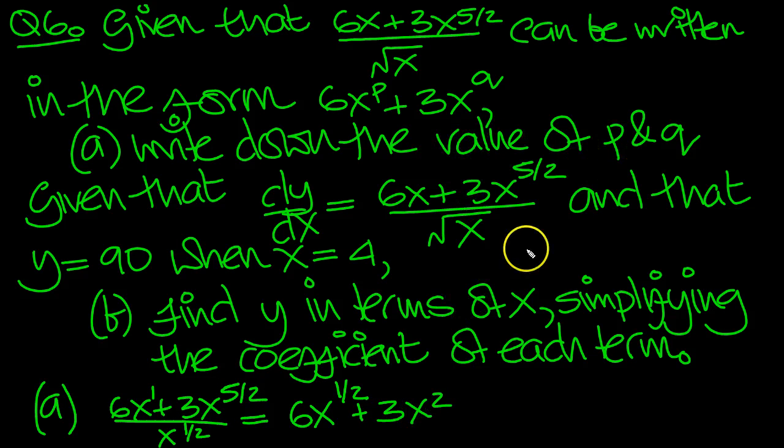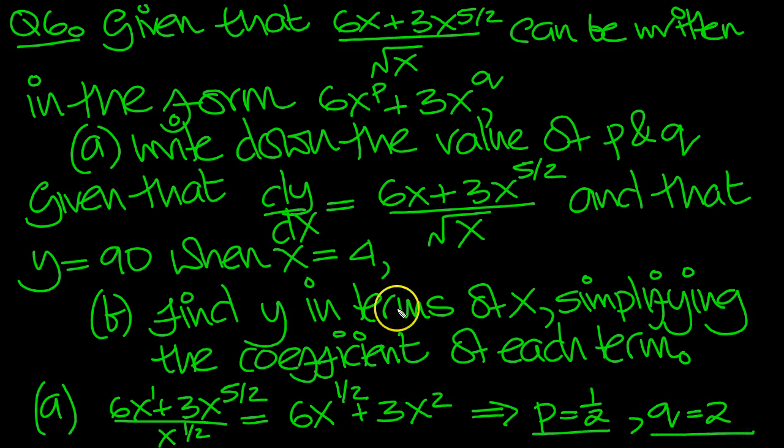So that tells us the values of p and q. So p equals 6. And no, it's the power. p is the power half, isn't it? So we need to get that right. So p is a half. Reading off the correspondences. And 3x to the q. So q is 2. So p is a half and q is 2.